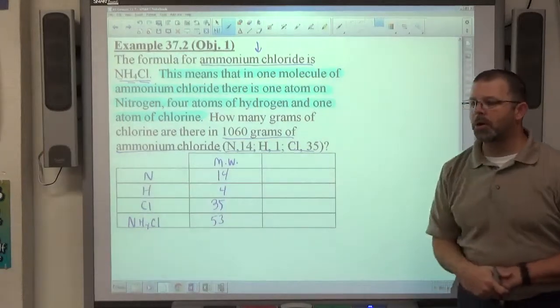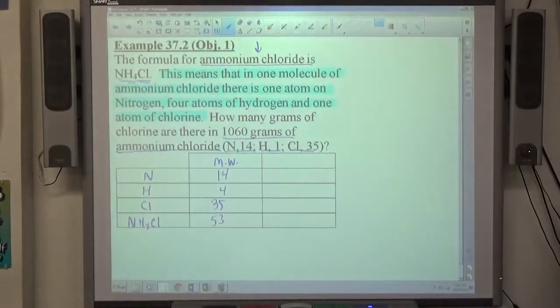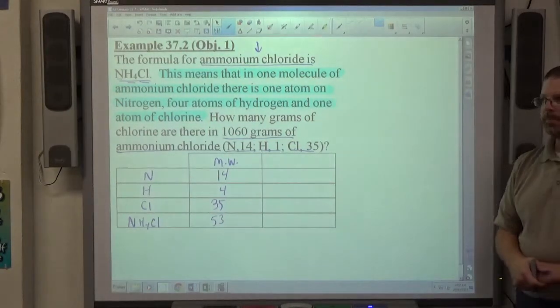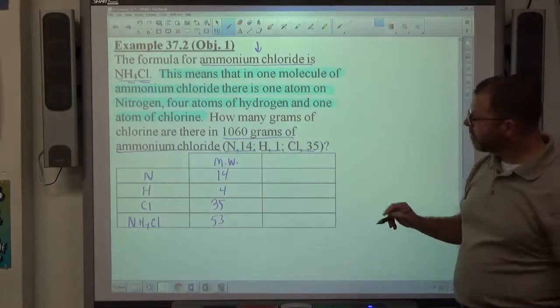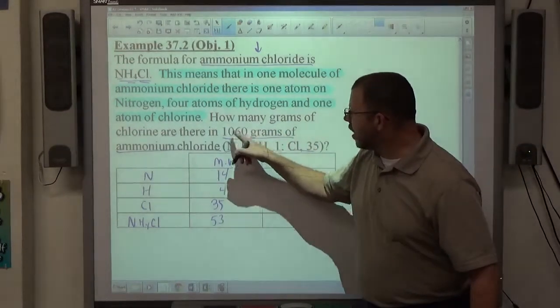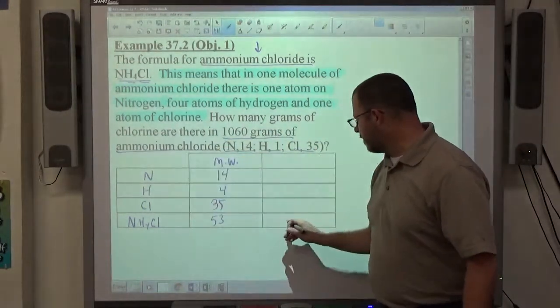So every molecule of ammonium chloride weighs 53 moles. Then 1,060 grams of ammonium chloride, that's this.